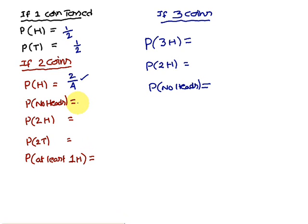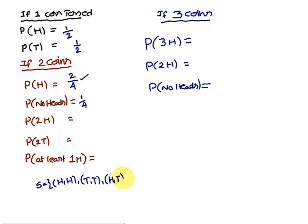Probability of no heads means all tails — that is only one pair, tail-tail, therefore 1/4. Probability of both heads: the sample space is HH, TT, HT, TH. Both heads means only one pair is favorable, therefore probability of two heads is 1/4.